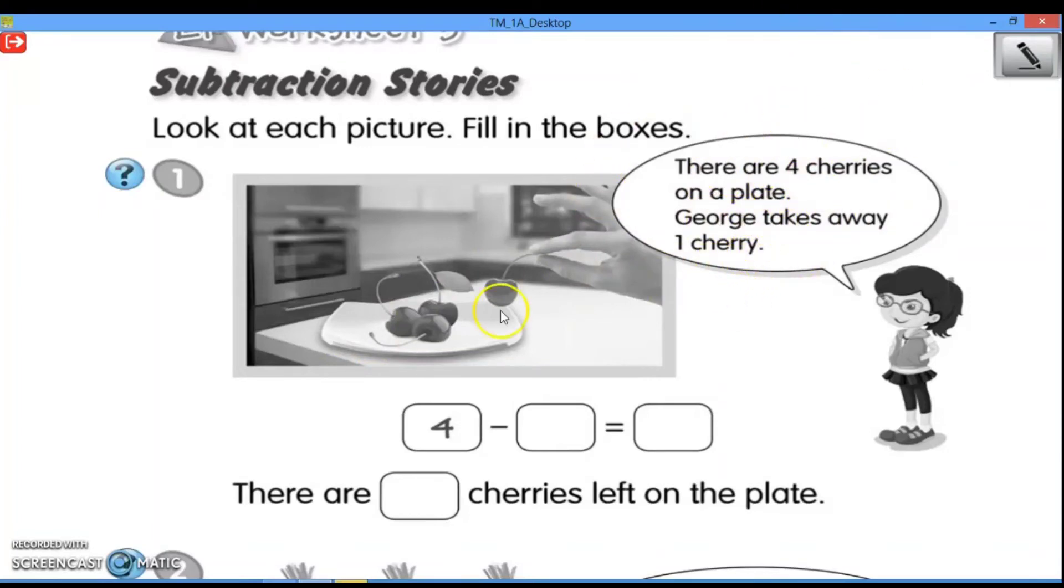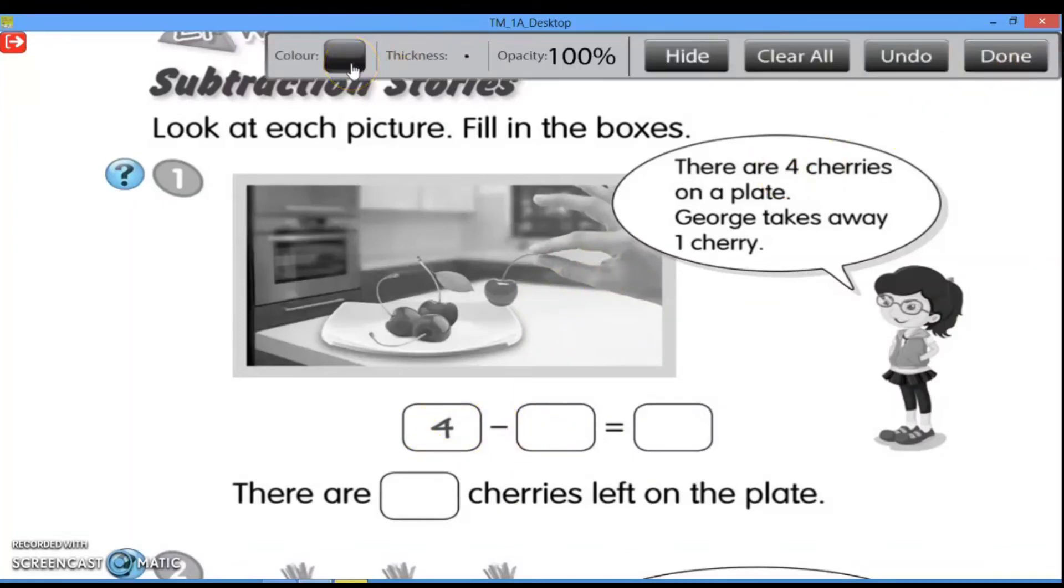Jadi, ada empat cherry yang ada di piring. Kemudian, George mengambil satu cherry. Maka teman-teman, di sini sudah dituliskan empat. Dikurang tadi jumlah cherry yang diambil. Nah, jumlah cherry yang diambil itu ada satu. Maka, kita tuliskan satu.